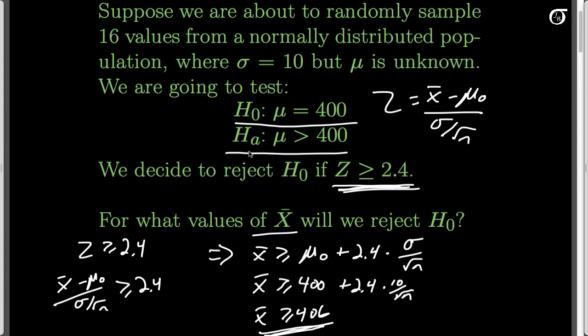We've translated the rejection region — z greater than or equal to 2.4 — into x-bar greater than or equal to 406. That's consistent with our alternative hypothesis: if our sample mean is a lot bigger than 400, we're going to reject the null hypothesis. Now let's look at calculating the probability of a type 1 error, type 2 error, and power.